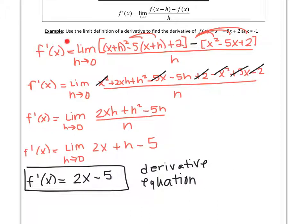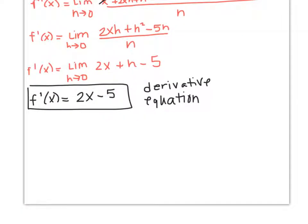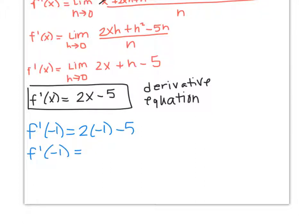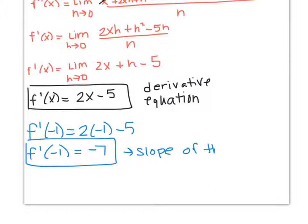This will help us find the slope at any given x value, and that's what they're asking. Using the limit definition, find the derivative of f of x at x equals negative 1. So if we plug negative 1 into our derivative equation, we get f prime of negative 1 is negative 7. So this is the slope of the tangent line at x equals negative 1.